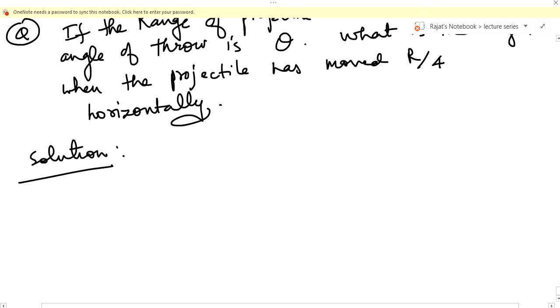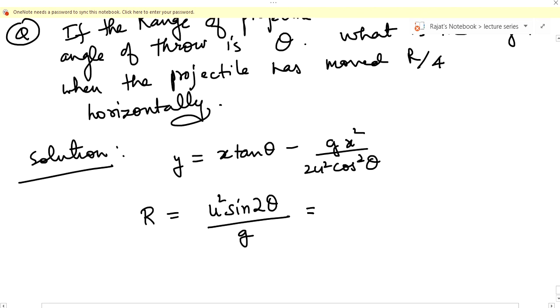We also bring the factor of range in the equation. How? Let's see. So y equals x tan theta minus g x squared upon 2 u squared cos squared theta. If you remember, range is equal to u squared sine 2 theta upon g. I can write it as 2 u squared sine theta cos theta upon g.